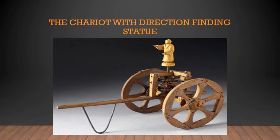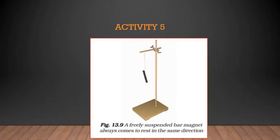Now let us make such a direction finder for ourselves. This is Activity 5. Take a bar magnet — a simple magnet — and put a mark on its end for identification. Tie a thread at the middle of the magnet so that you may suspend it from a wooden stand as shown in the picture. Make sure the magnet can rotate freely without any obstructions. Let it come to rest, then mark two points on the ground to show the position of its ends. Draw a line joining the two points — this line shows the direction in which the magnet was pointing at rest.